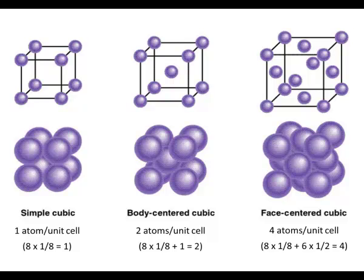Body-centered, there are two atoms per unit cell. Again, the eighth in a corner, eight of them, plus the one in the center equals two.